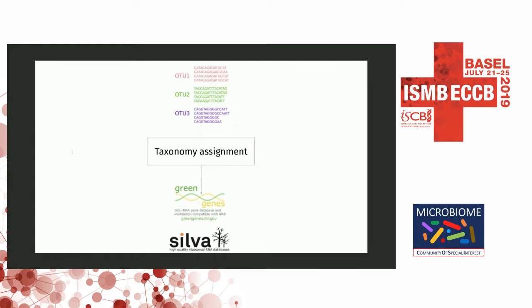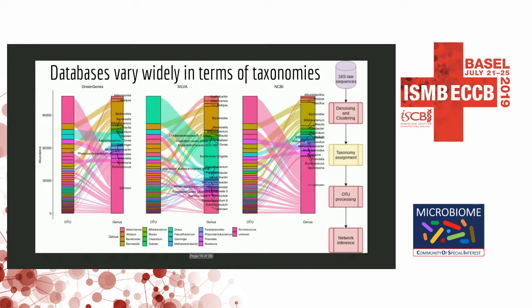The next step is taxonomy assignment, where you assign taxonomy labels to representative sequences using various databases. What you can see here is three different databases — GreenGenes, Silva, and NCBI. On the left for each figure is the original OTU distribution, and on the right is the genus composition assigned by the database. Even the most abundant representative sequence is sometimes assigned to a different label in a different database, and there are many other such differences, clearly showing that the different databases are not in agreement with each other.